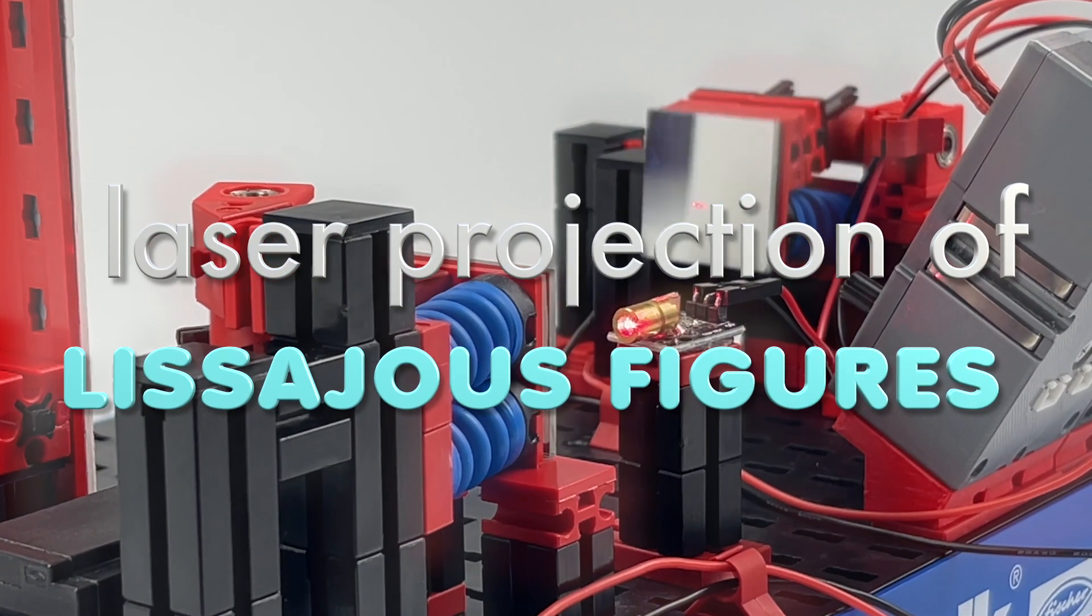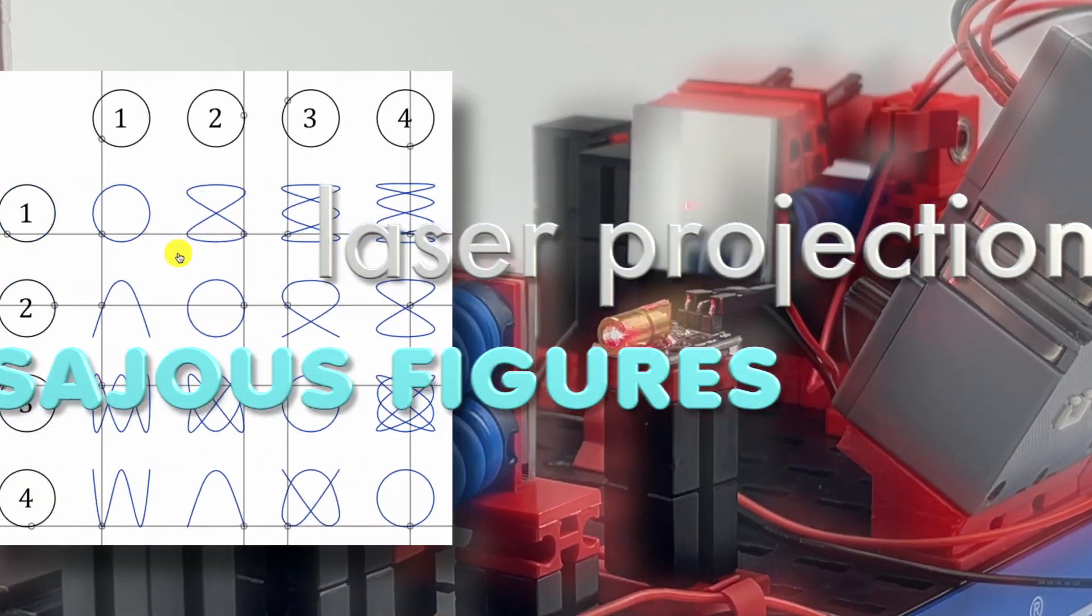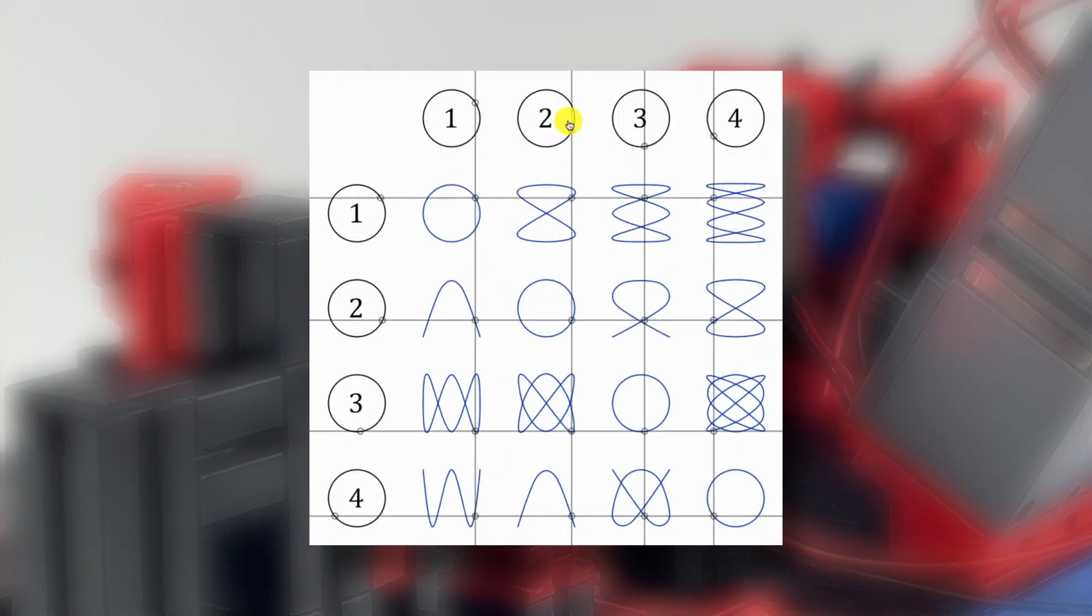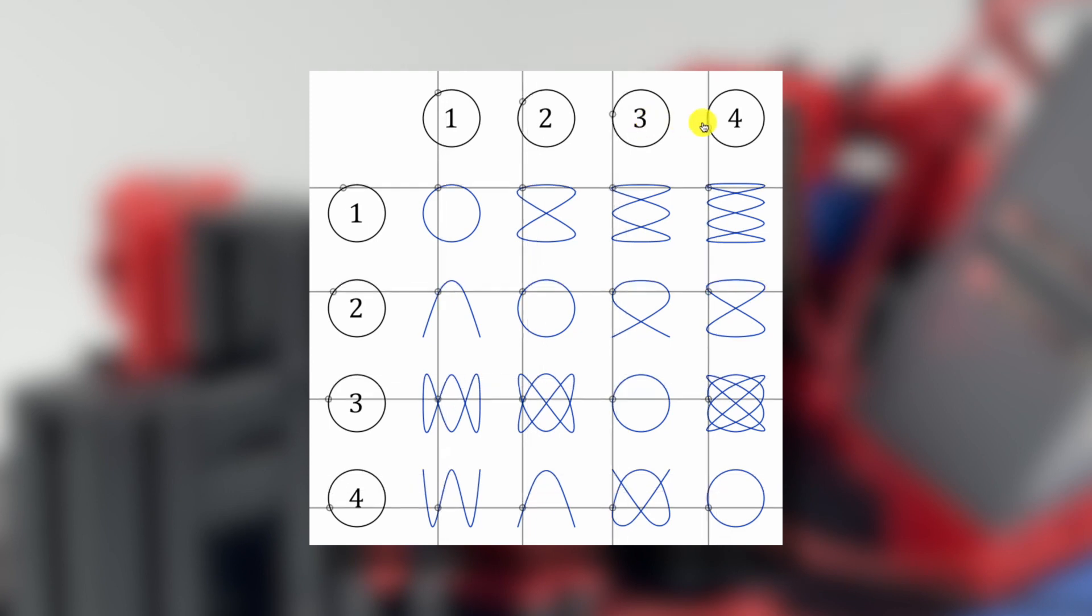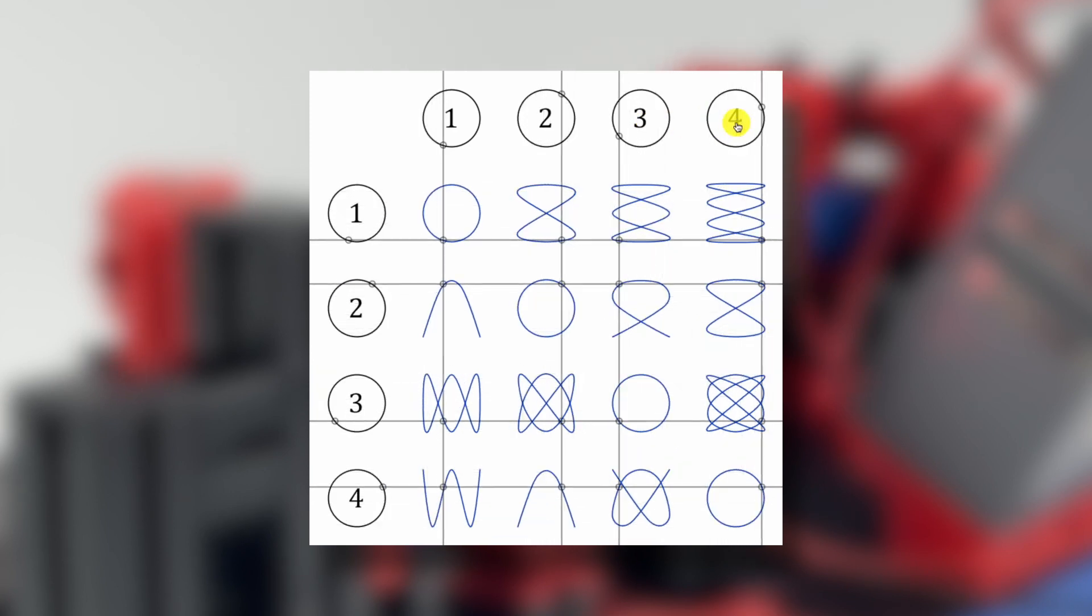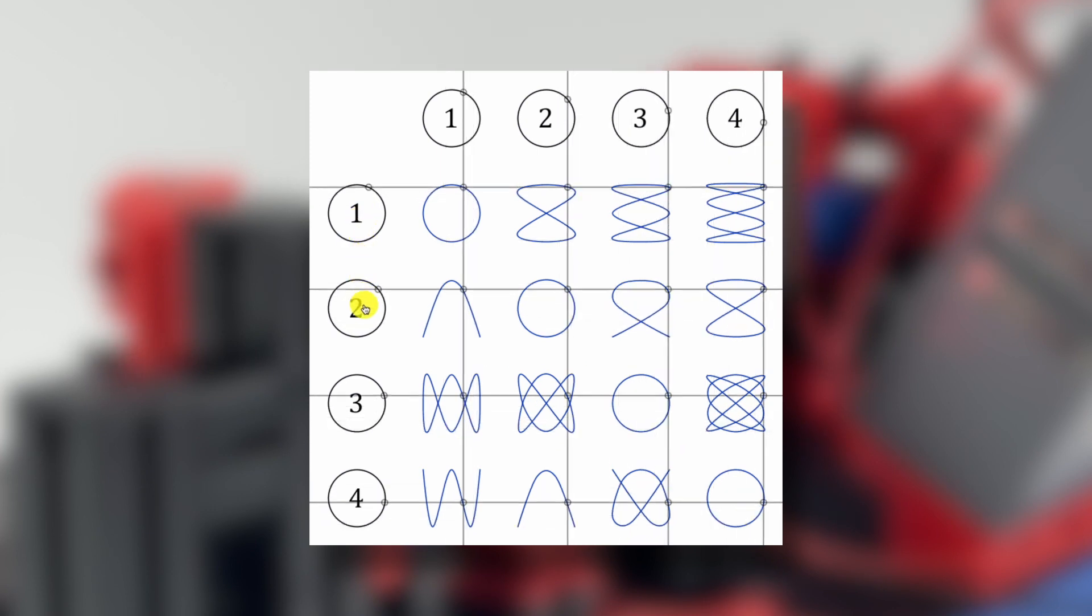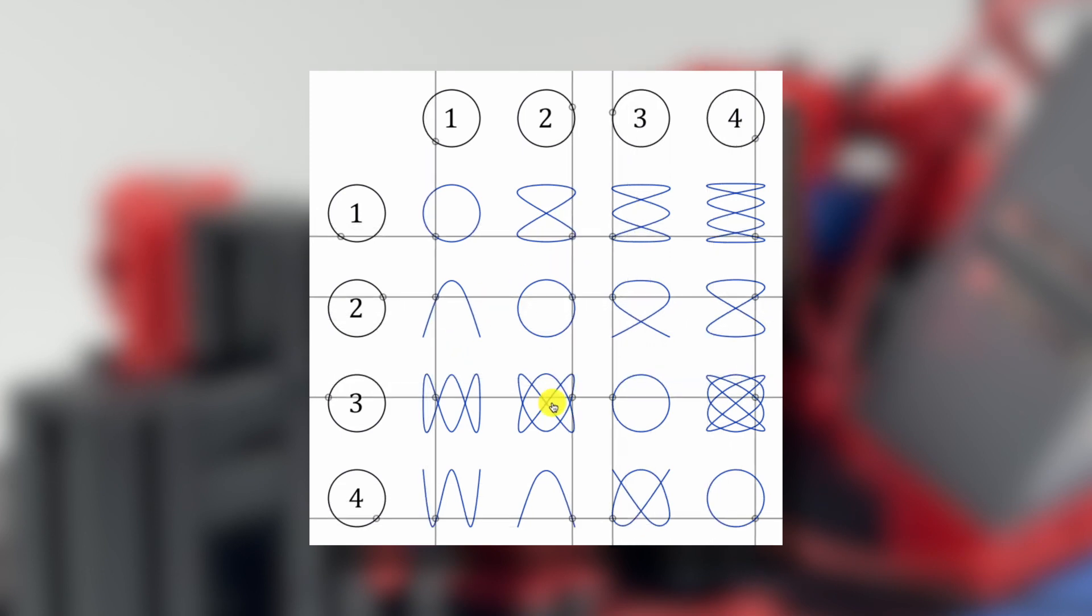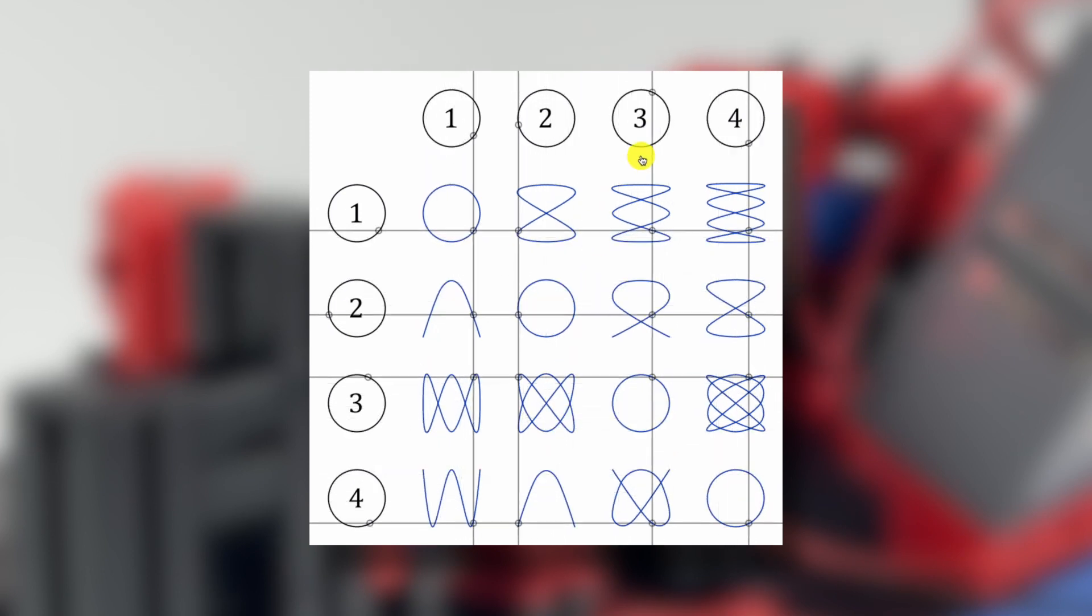But what are Lissajous figures actually? Well, take a look at these four sine waves at the top here. They define the x-coordinate of a point with frequencies one, two, three and four times. And over here the same frequency ratios but they define the y-coordinates of the figures that show up in the matrix over here. Depending on those ratios you'll get different figures.